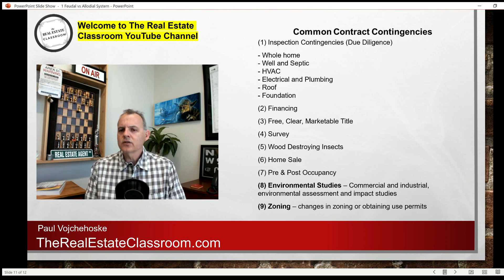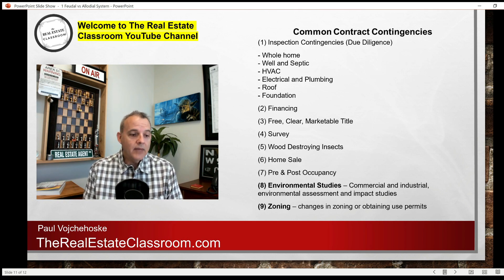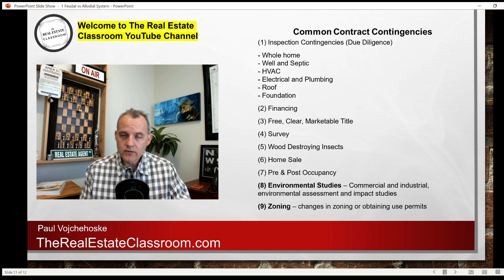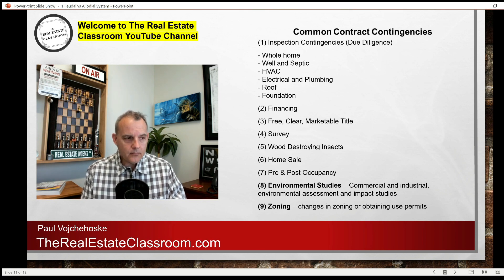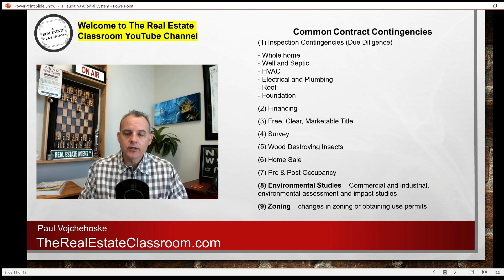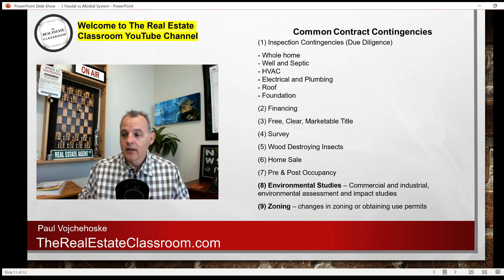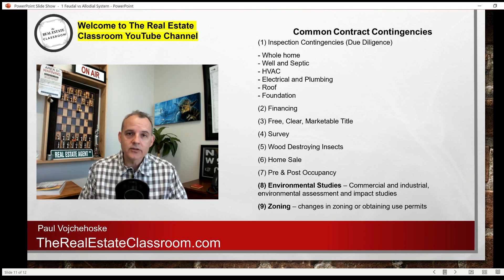Numbers eight and nine are more for commercial and industrial type properties. The buyer may need environmental studies or environmental assessments, or impact studies. Maybe the buyer has a particular intended use for the property that requires zoning changes, so they put a contingency in the contract saying it's contingent upon getting approval from the zoning commission or city council to change the zoning. That's why in commercial and industrial transactions, due diligence periods or contingencies may be months or even years, because processes like zoning changes are not fast. We typically don't see these in a run-of-the-mill residential sale, but they are very common in the industrial and commercial arena.